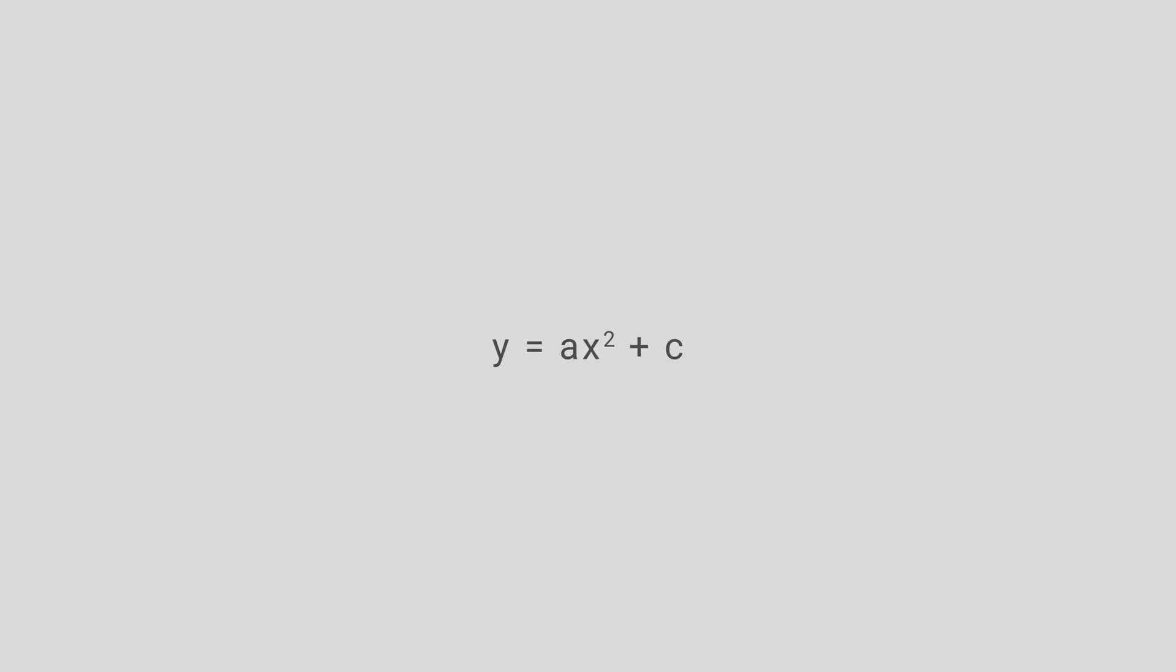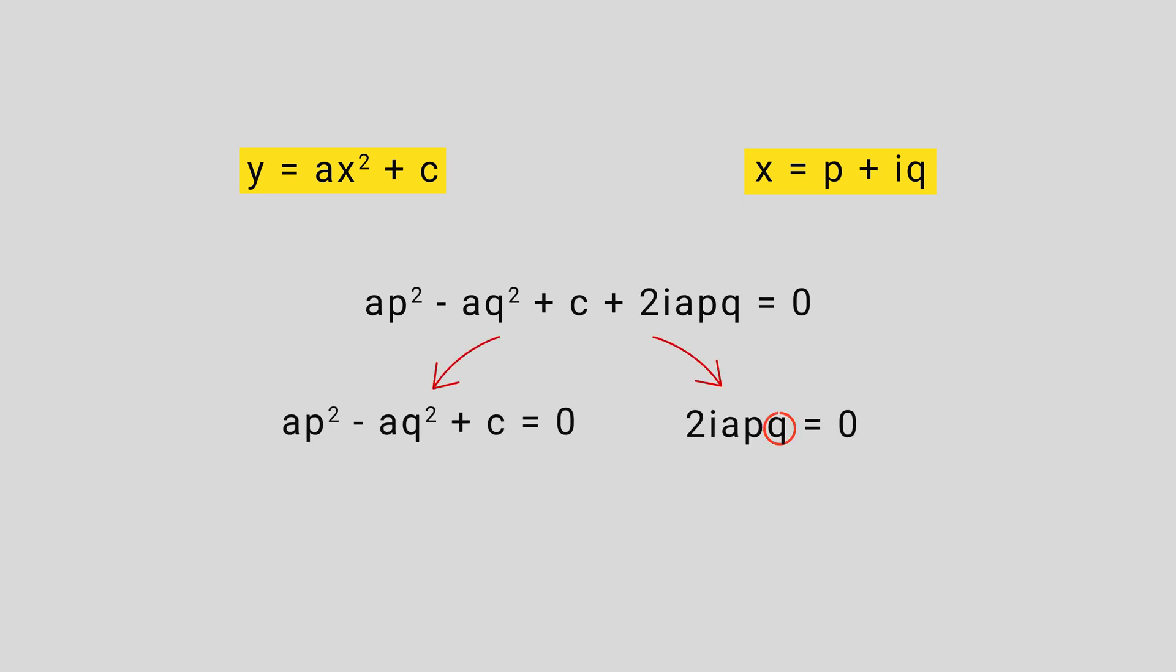Now let's find the roots of this quadratic equation y = ax² + c. Let x = p + iq be one root of this equation. After putting x into the equation and simplifying, we find that q is not equal to 0 because our roots are imaginary, and a is also not equal to 0, so p must equal 0.